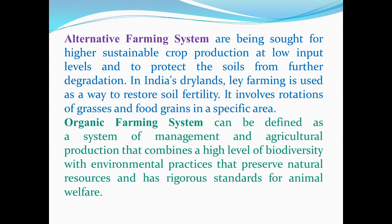Alternative farming systems are being sought for higher sustainable crop production at low input levels and to protect the soil from further degradation. In India and New Zealand, ley farming is used as a way to restore soil fertility. It involves rotation of grasses and food grains in a specific area.